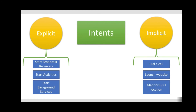Implicit intents, on the other hand, do not name a target, and are often used to activate components in other applications. In the absence of a designated target, the Android system must find the best component or components to handle the intent — a single activity or service to perform the requested action, or the set of broadcast receivers to respond to the broadcast announcement. It does so by comparing the contents of the intent object to intent filters, which are structures associated with components that can potentially receive intents. Filters advertise the capabilities of a component and delimit the intents it can handle, opening the component to the possibility of receiving implicit intents of the advertised type.